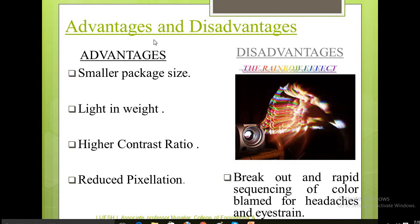Now we will see the advantages, pros and cons of these DMDs. Advantages: smaller in size, light weight, higher contrast ratio, reduced pixelation. Pixelation is caused by displaying a bitmap or section of a bitmap at such a large size that individual pixels are visible. Simply, if you zoom an image more and more, you can see the square display elements.